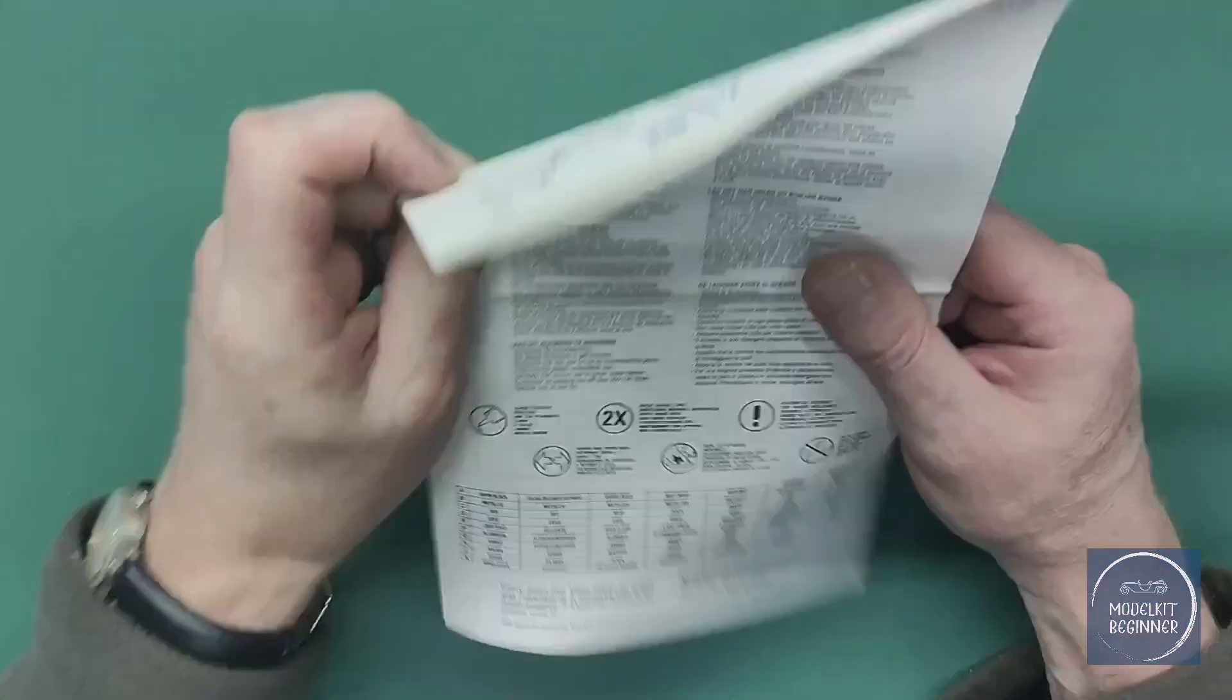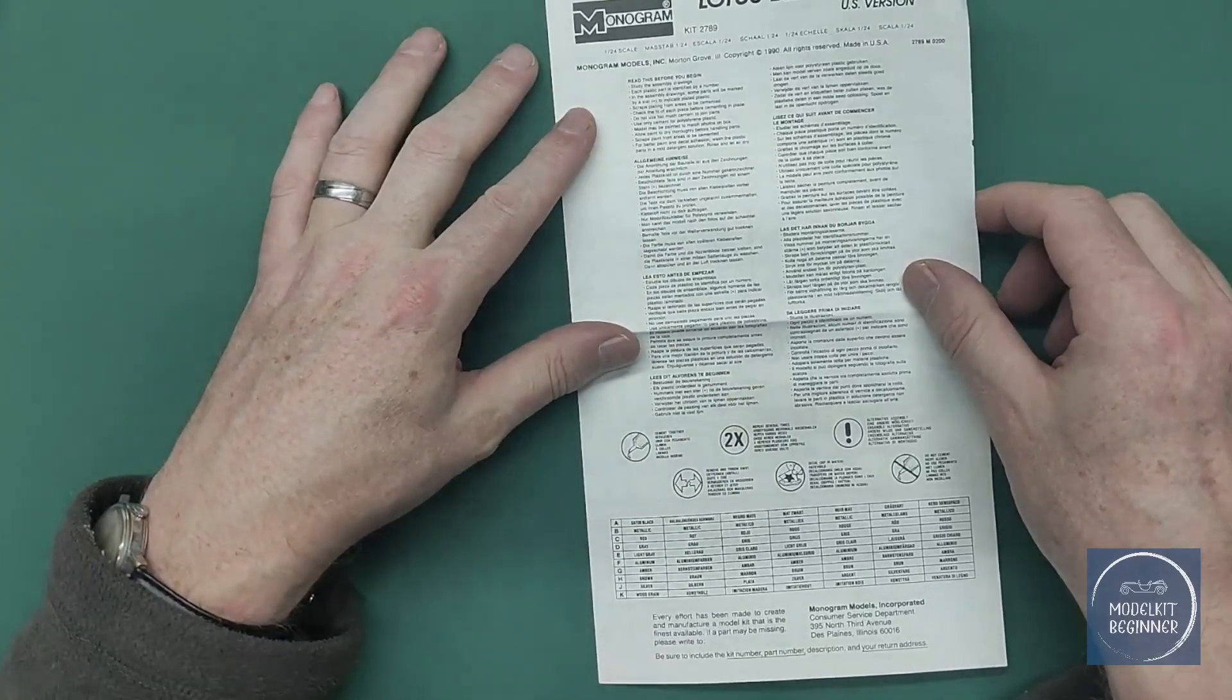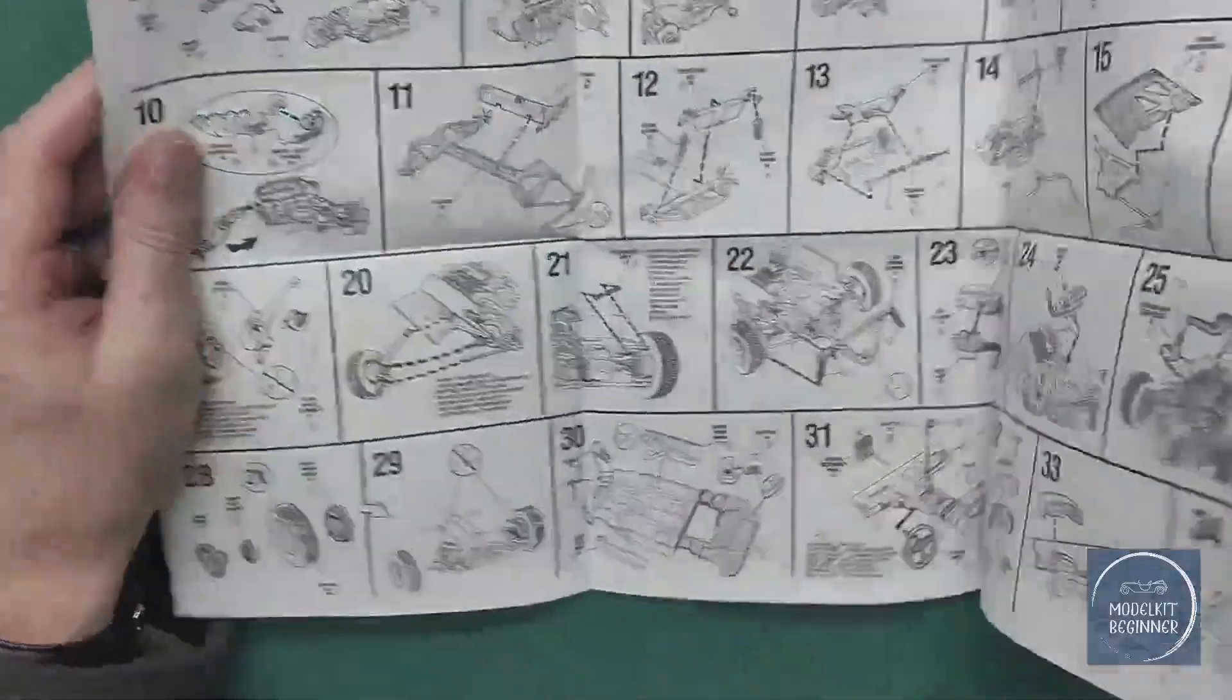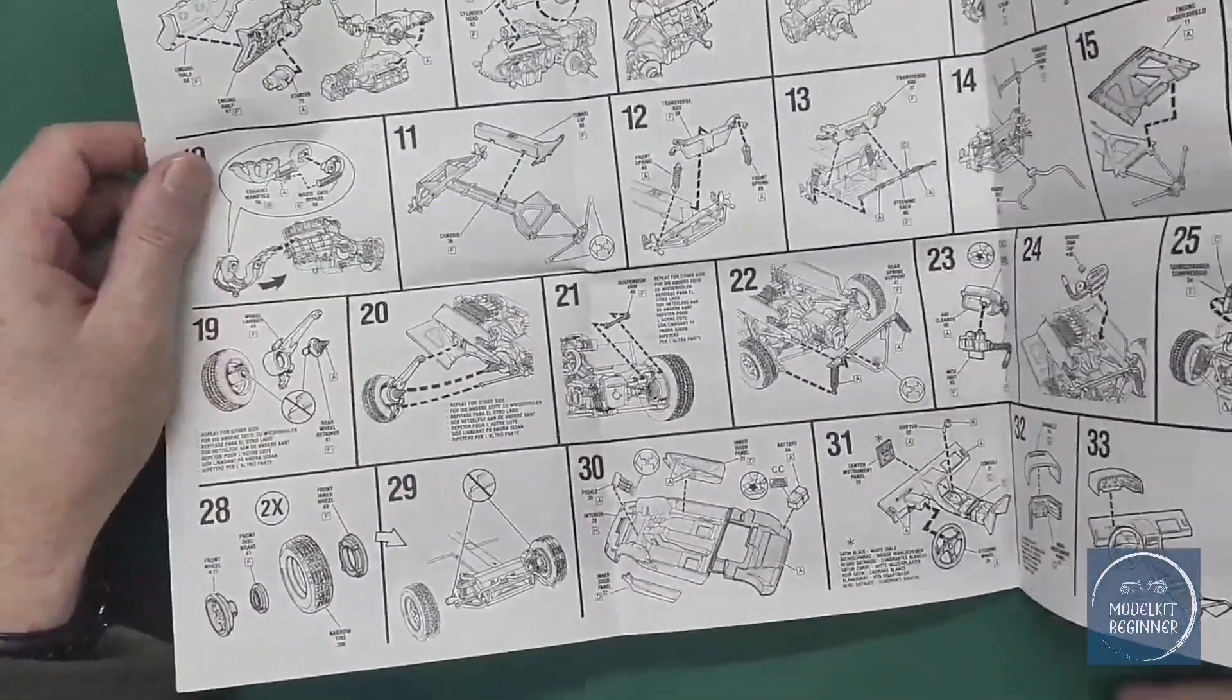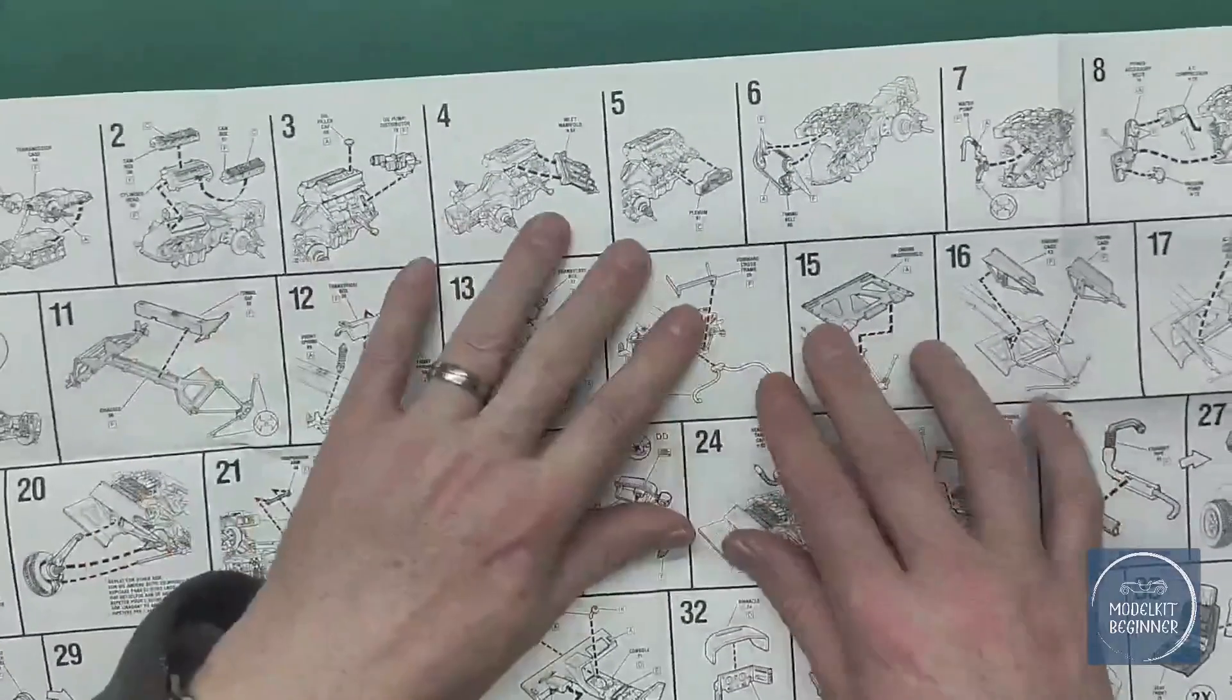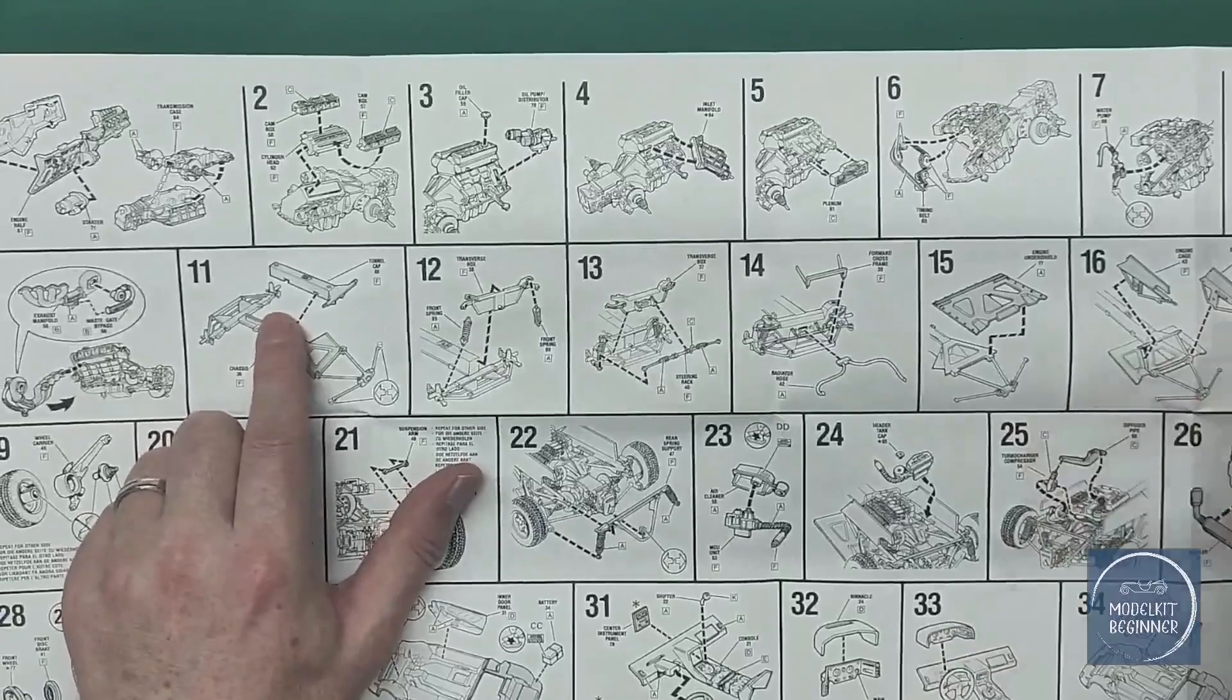Let's have a look at the instruction sheet. It's the Esprit Turbo US version with color callouts at the bottom. I can't see the sprue numbers, but it starts with the engine. It's a wide format instruction sheet. One, two, three, four, five, six, seven, eight—quite an intricate engine to build. Then we get to the chassis with the transverse box, front spring, forward cross frame—all frame construction—and the engine goes in.